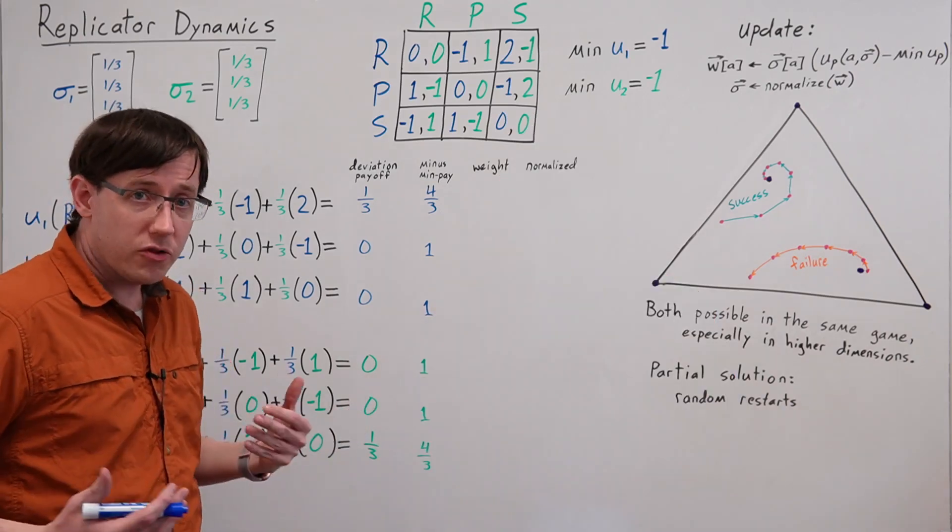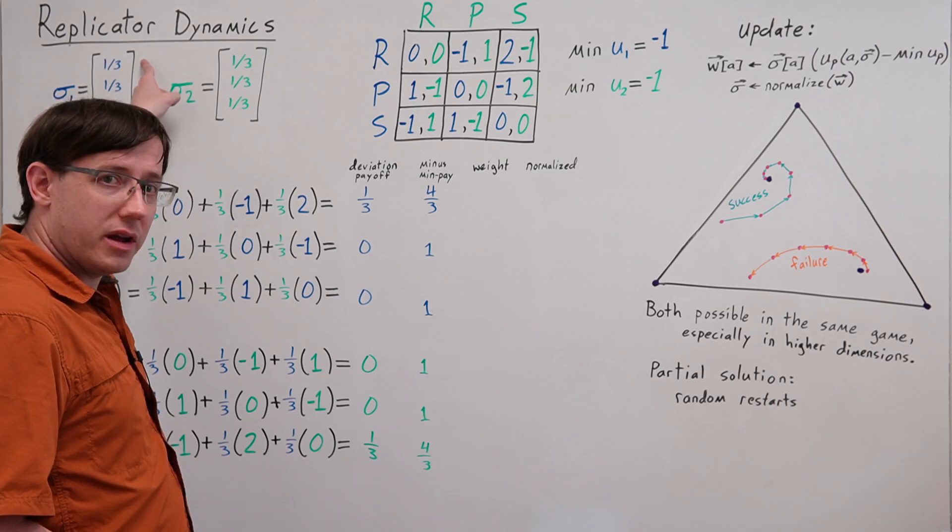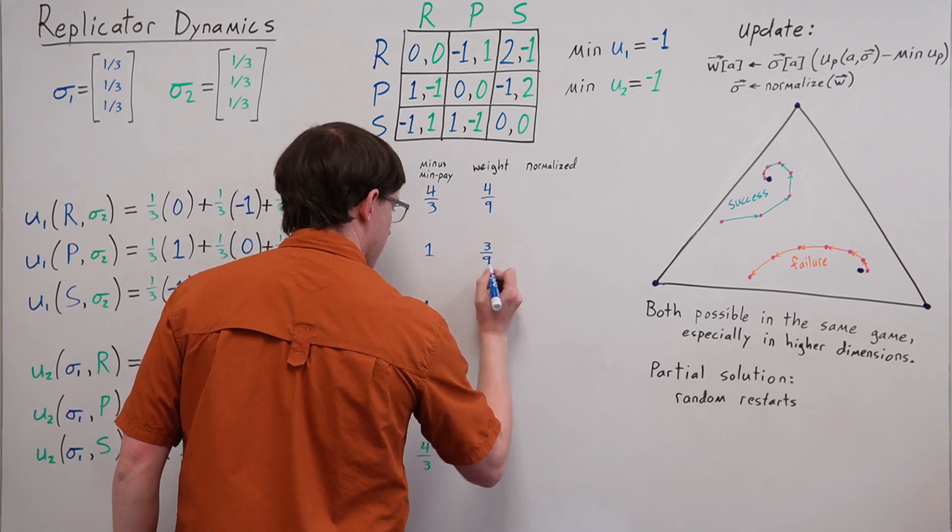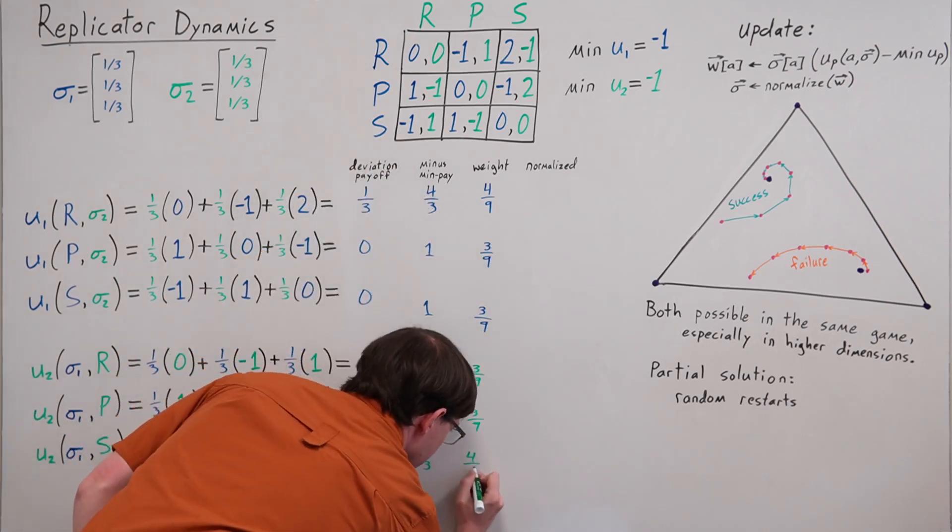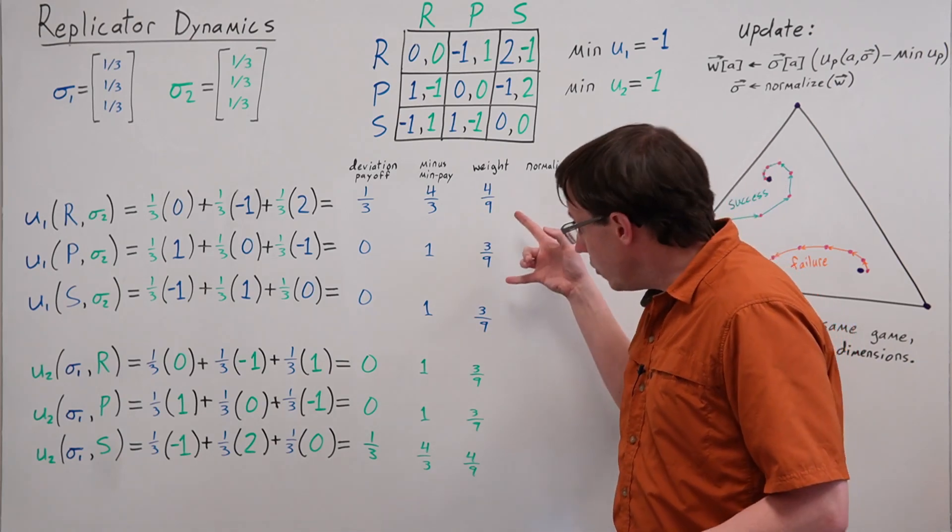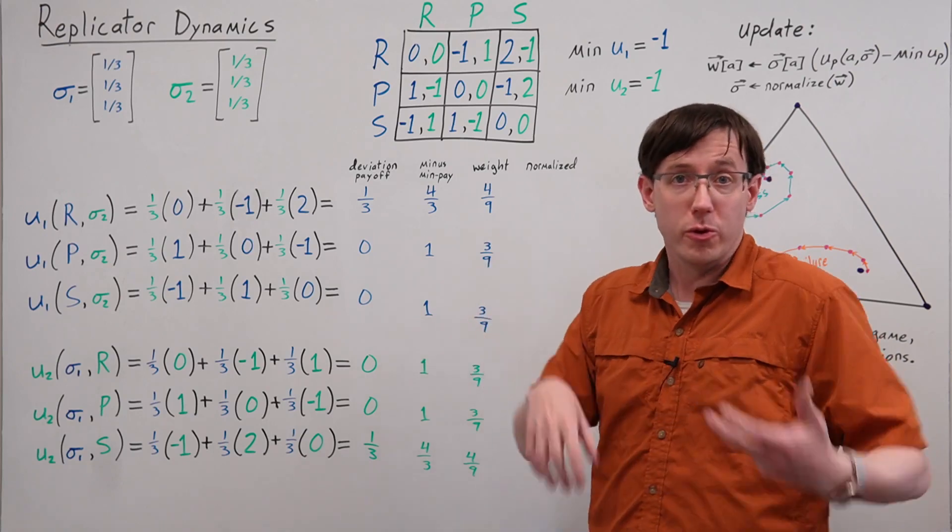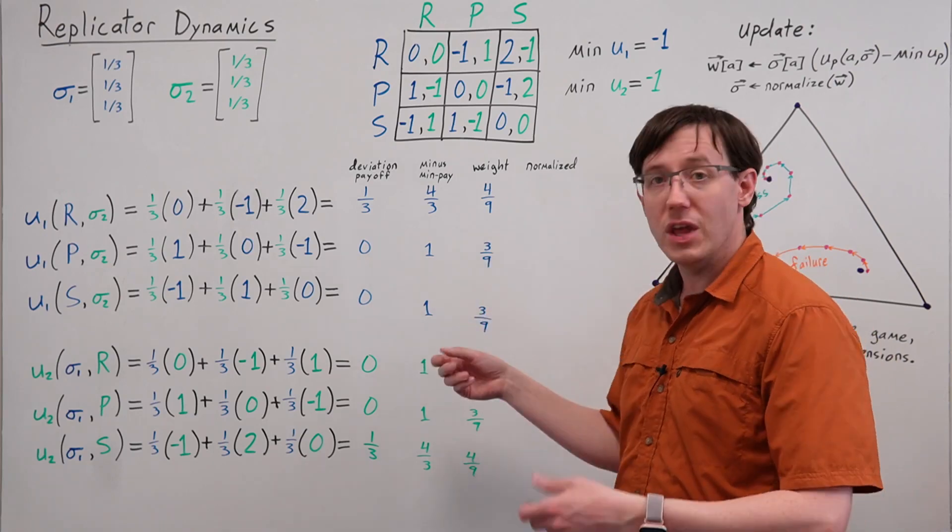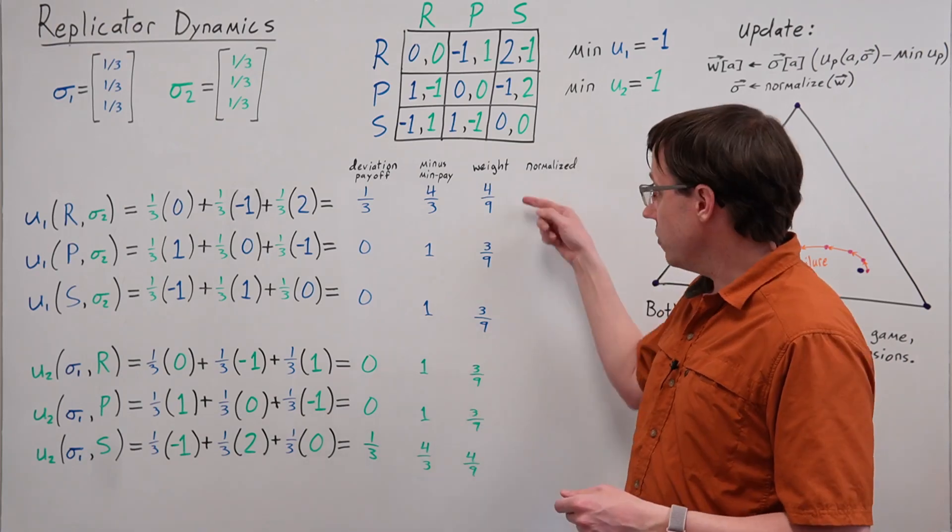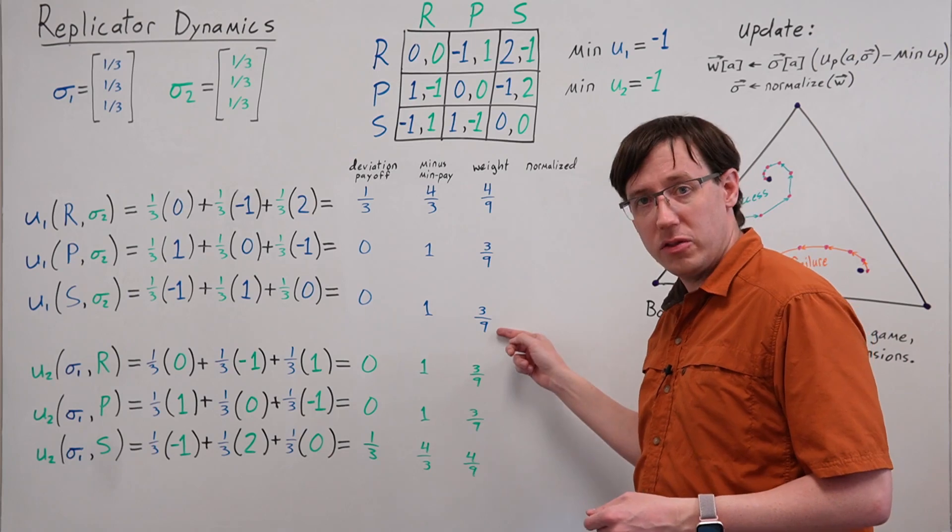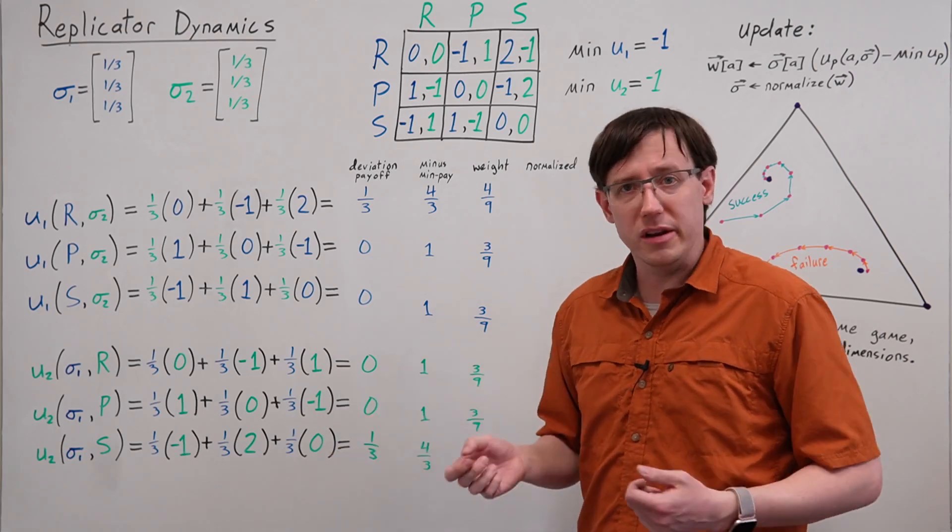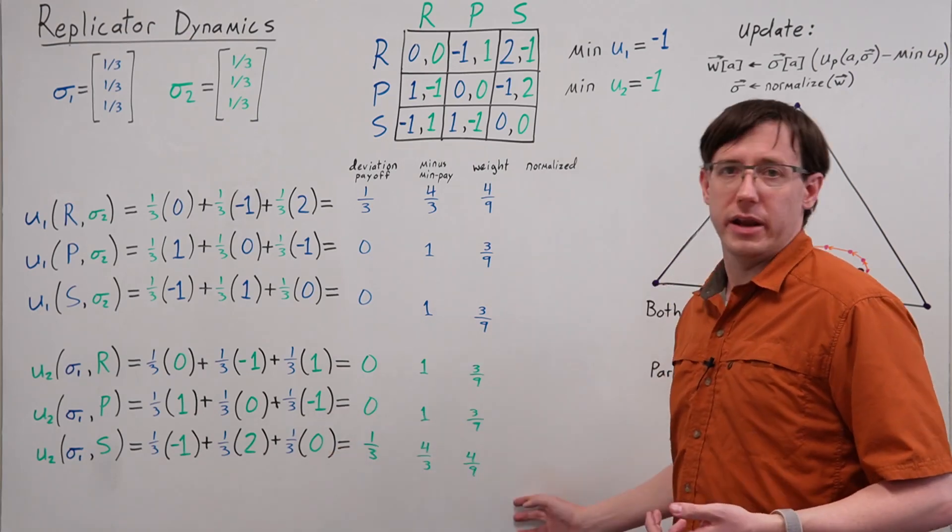After this transformation we can use these adjusted deviation payoffs as multipliers for the probabilities. For each action, we will multiply the current probability of that action by its adjusted deviation payoff. But these weights we've just calculated no longer sum to 1, so we need to renormalize by dividing through by the sum of weights in order to get back a valid probability distribution for each player. Player 1's weights sum to ten-ninths, so we can multiply all of these by nine-tenths to get the new probability distribution, and we can do the same for player 2.